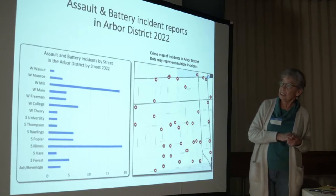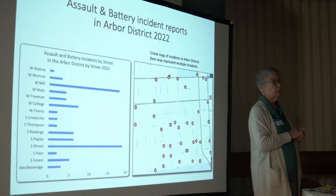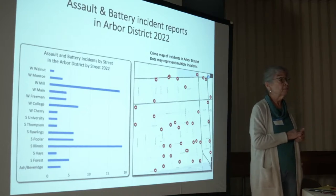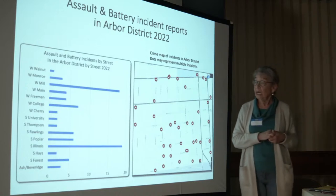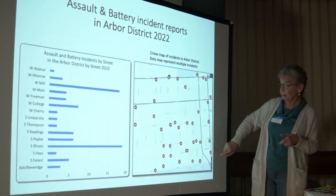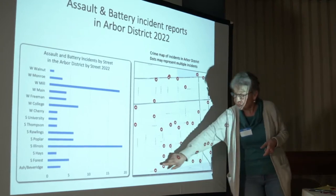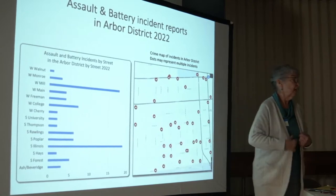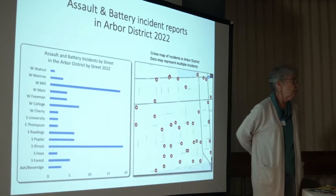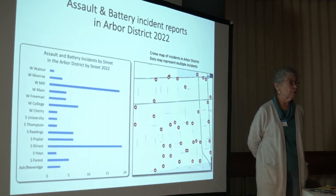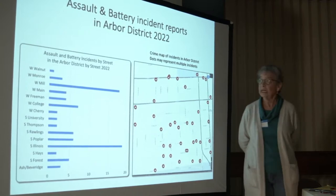These are assault and battery instances, organized by street, because I wanted to see where most assaults and batteries were happening. You can see that South Illinois, as I talked about, is the site of a lot of them. And then Mill Street, which runs right along here — there's a lot of gunshots and a lot of assaults and batteries all along Mill Street, just next to the university.